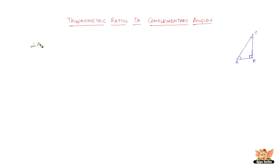Angle A plus angle C equals 90 degrees. Now let's find the trigonometric functions of angle A. Sine A equals opposite by hypotenuse. The opposite of angle A is BC, and the hypotenuse is AC, so sine A equals BC over AC.